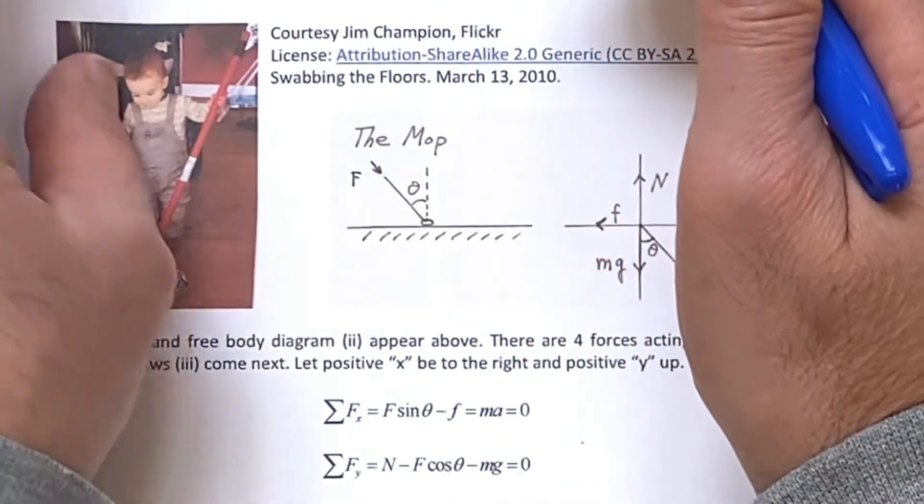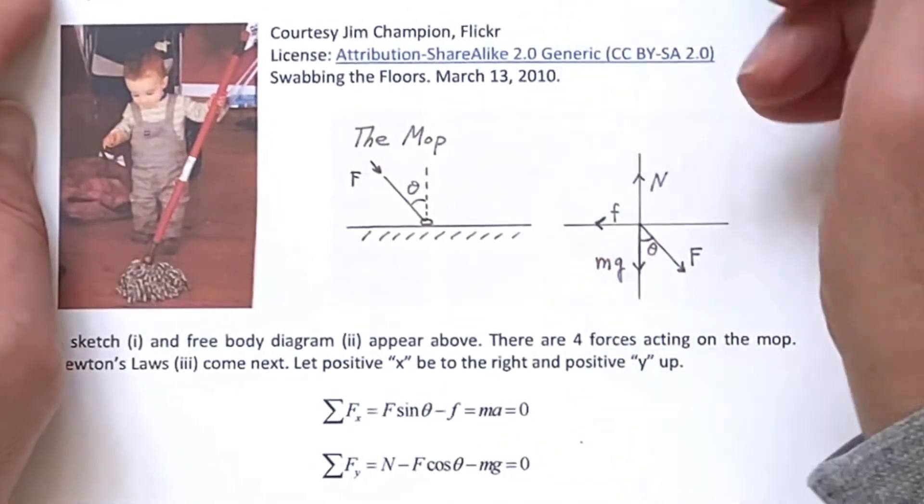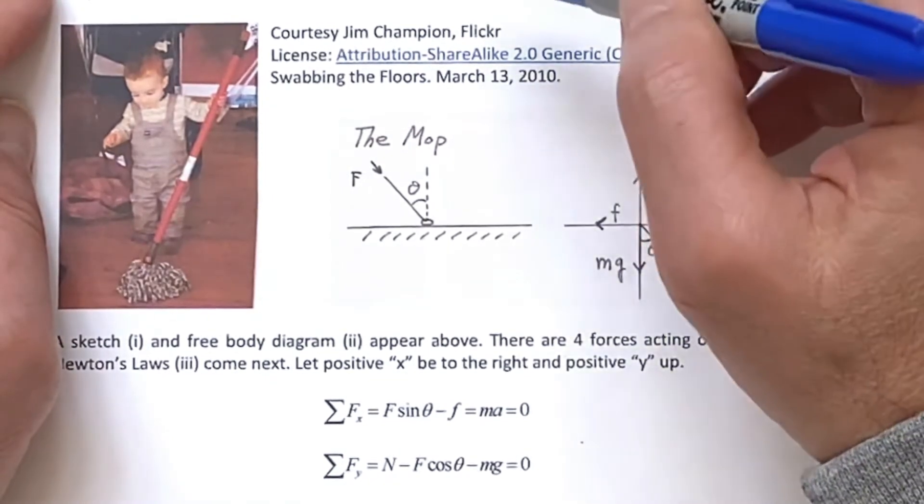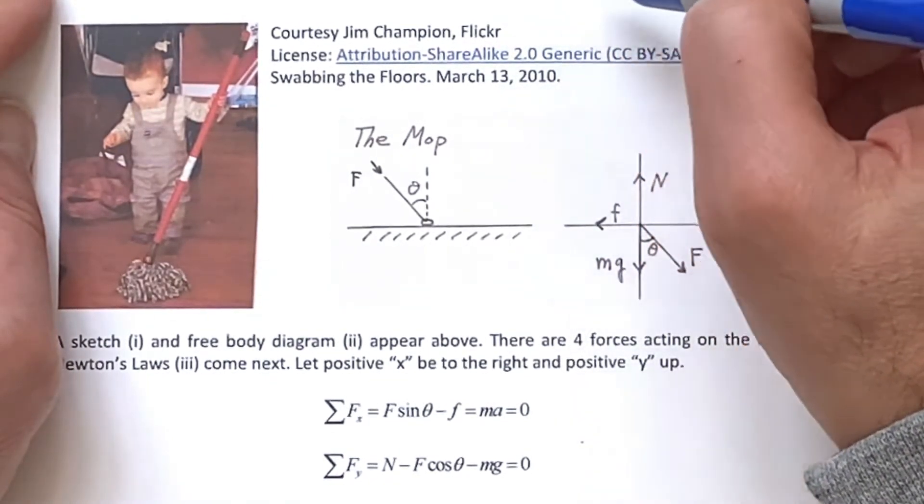We want the force necessary so the mop moves across the floor at constant speed, and then find the angle so that no matter what force you apply, the mop will not move.